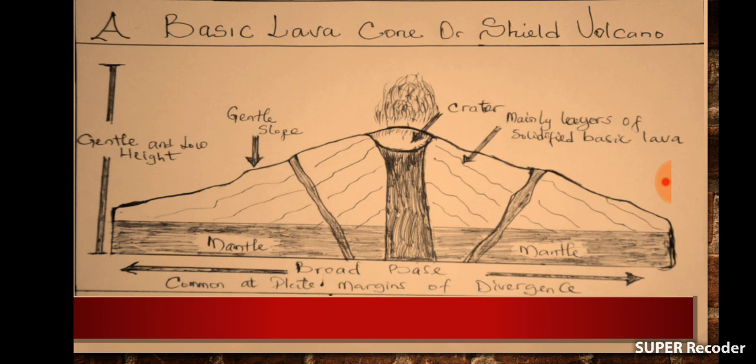Since the lava has to flow over very long distances before it cools and solidifies, it ends up resulting in a very low height of the volcano as well as a very gentle slope. Such basic lava cones are often characterized with deep craters around them, and these deep craters at times may contain a collection of water to form what we call a crater lake.